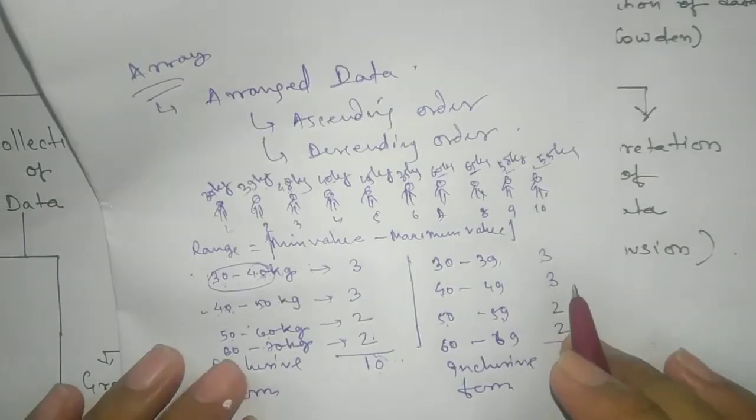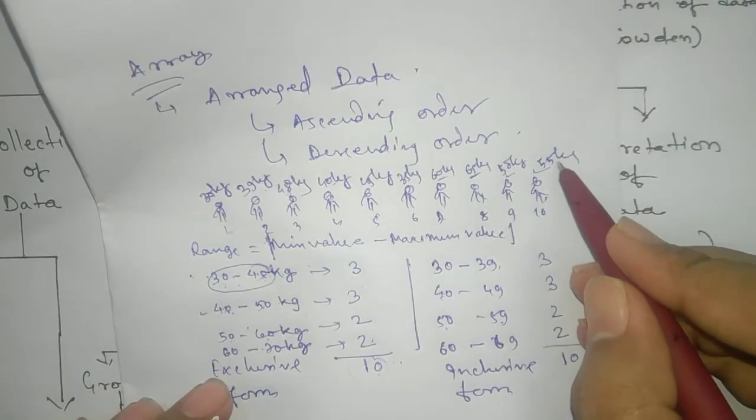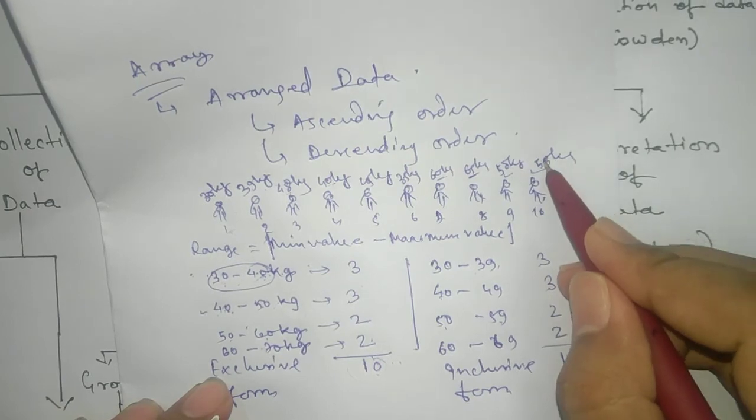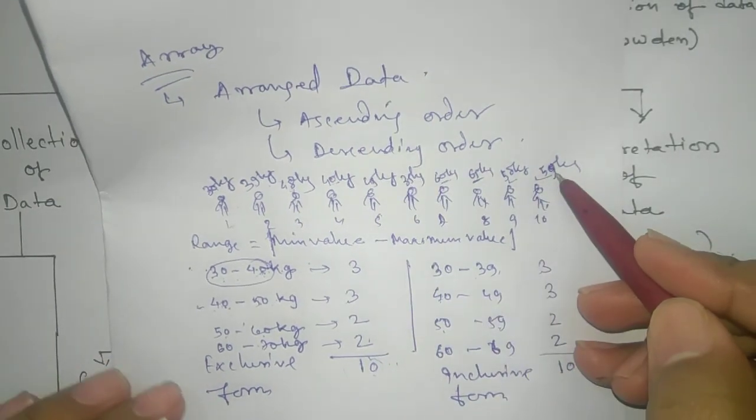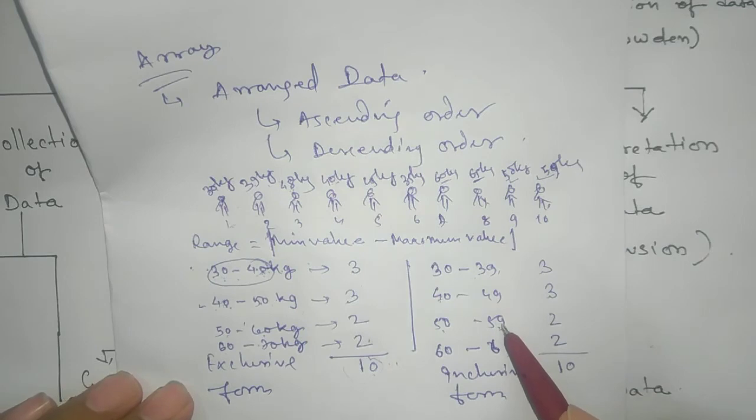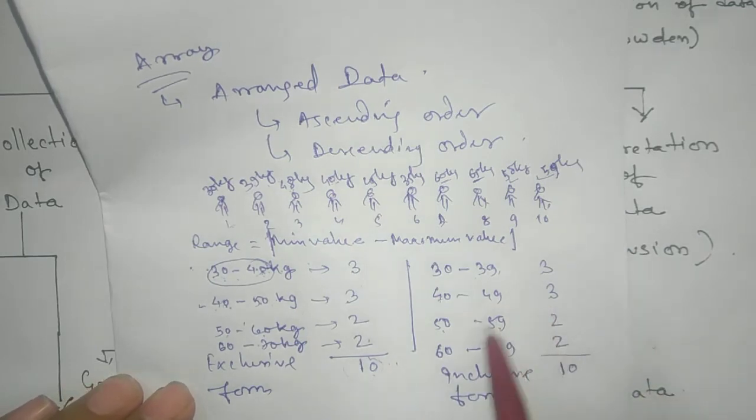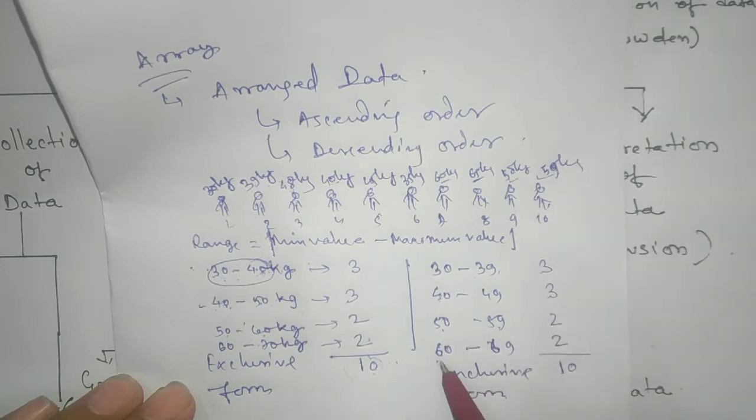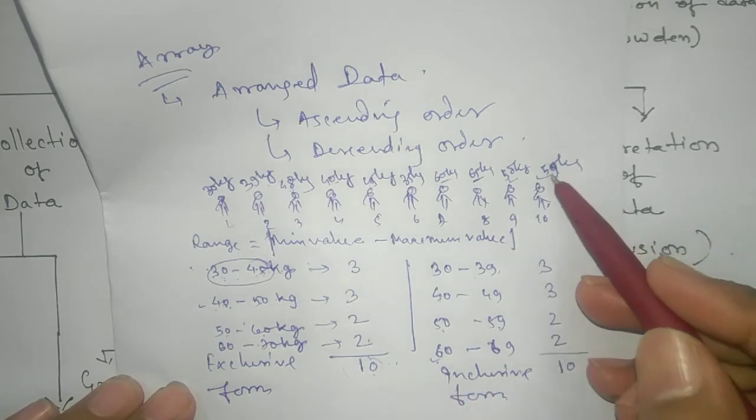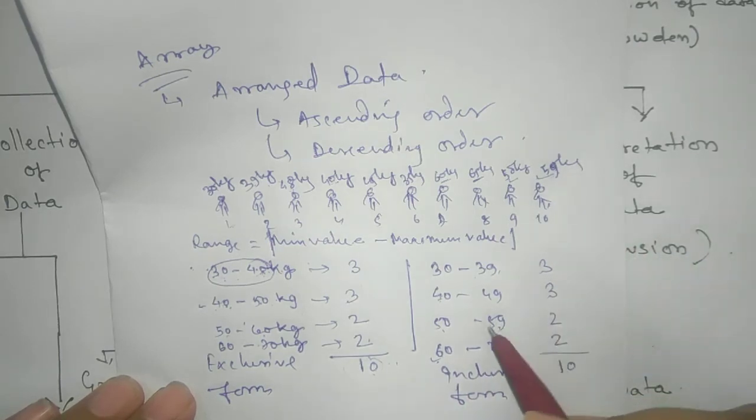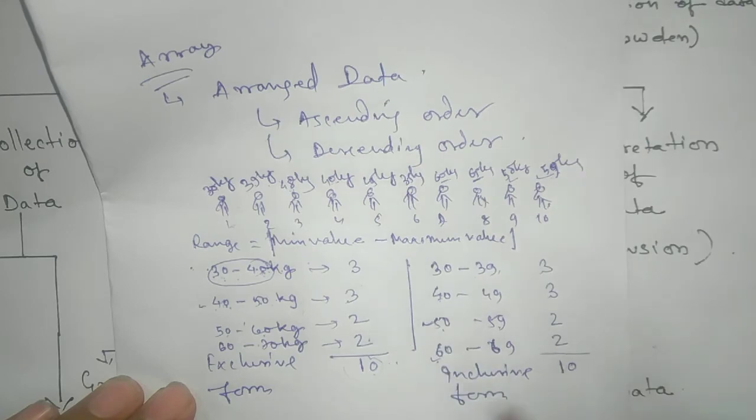Now the question arise if there is 59. If 59, shall I keep 59? Why sir? Because you see that you need to keep 59 in this category. Remember.